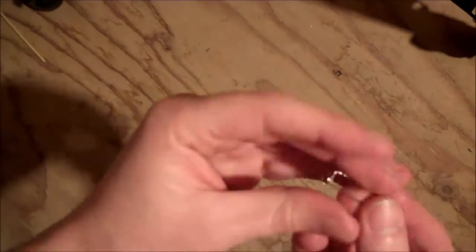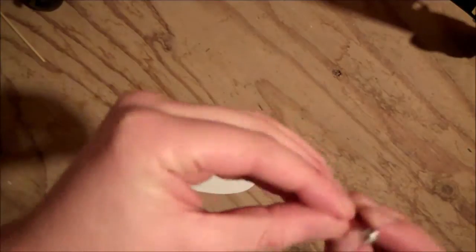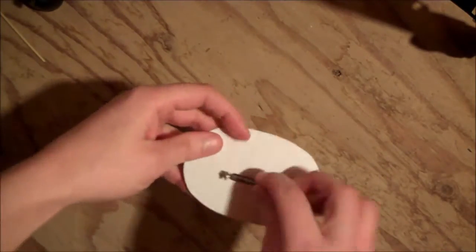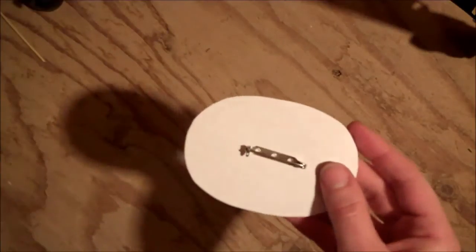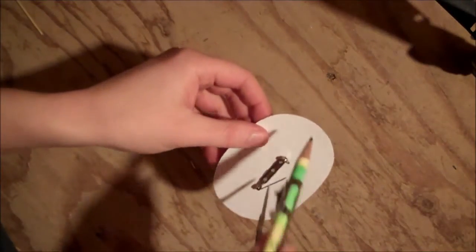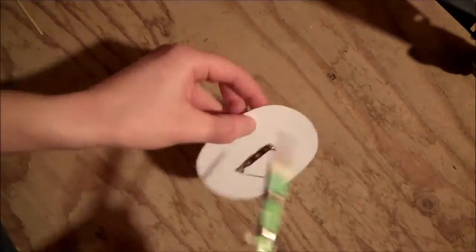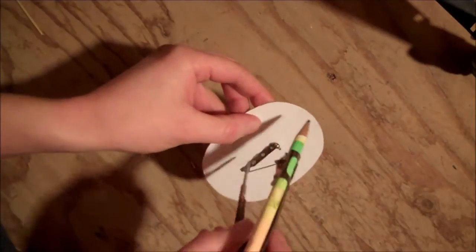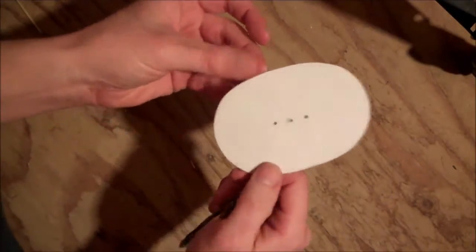Start by cutting yourself an oval shape out of a piece of cardboard and get yourself a pin back. Then you're just going to want to glue the pin back to the center of the oval piece of cardboard. Once you've got that glued, you're going to take a pointy object and poke the holes through the pin back through the cardboard.